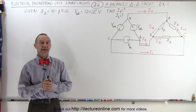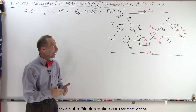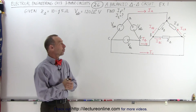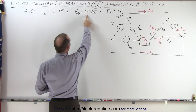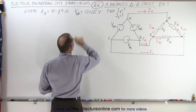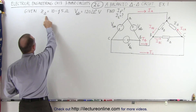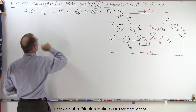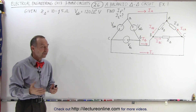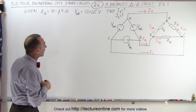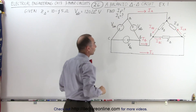Welcome to our lecture online. Now let's do our first example with a delta-delta circuit. We're given the line voltage of 120 volts with a phase angle of 0 degrees, and we're given the impedance of the load: 10 minus j5, which looks like a capacitive impedance. We're trying to find the phase and the line currents.